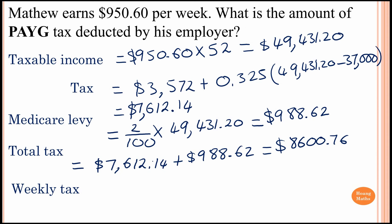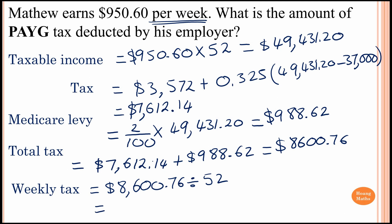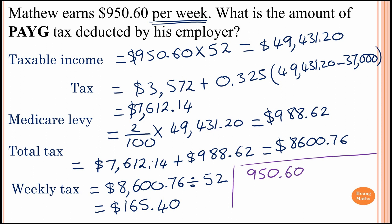Matthew's weekly tax is $8,676 divided by 52 weeks, which equals $165.40. You can also find his net income after tax: $950.60 minus $165.40 equals $785.20. That is his net take-home income per week after tax.